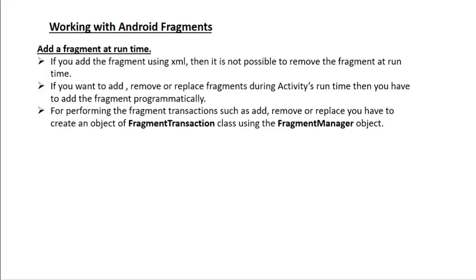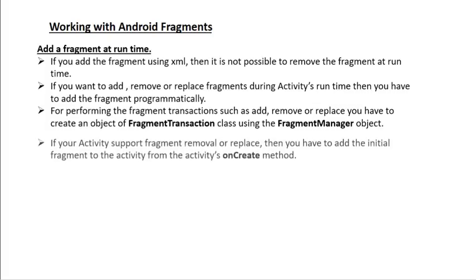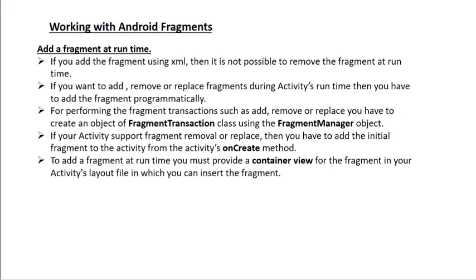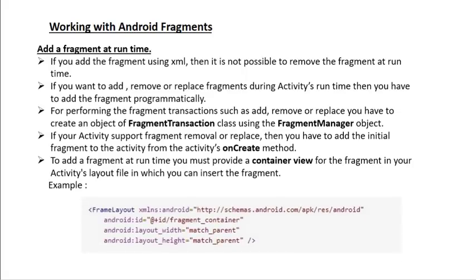For performing fragment transactions such as add, remove, or replace, you have to create an object of the FragmentTransaction class using the FragmentManager object. If your activity supports fragment removal or replacement, you have to add the initial fragment from the activity's onCreate method. To add a fragment at runtime, you must provide a container view for the fragment in your activity's layout file. Here the container view is a FrameLayout, and you specify an id for the container view.